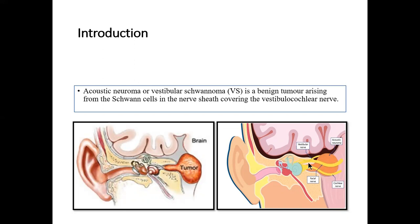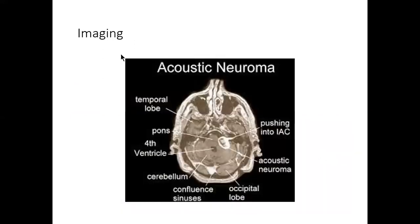This is the facial nerve, and this is the cochlear nerve, with the tumor mostly arising from the superior and inferior vestibular nerve. You can see the vestibular schwannoma arising from the internal acoustic meatus. This is the brainstem pons, this is the fourth ventricle, this is the cerebellum, the confluence of sinuses, the occipital lobe, and the temporal lobe.